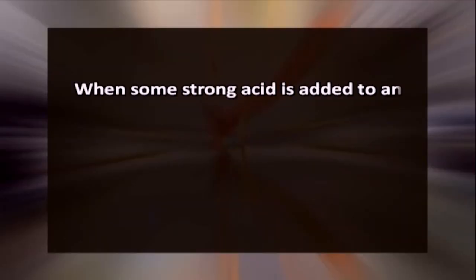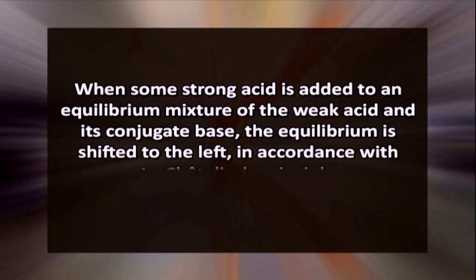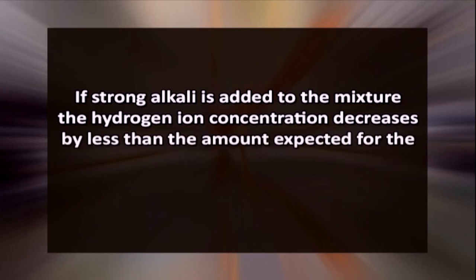When strong acid is added to an equilibrium mixture of weak acid and its conjugate base the equilibrium is shifted to the left in accordance with the Le Chatelier's principle. Because of this the hydrogen ion concentration increases by less than the amount expected for the quantity of strong acid added. Similarly if the strong alkali is added to the mixture the hydrogen ion concentration decreases by less than the amount expected for the quantity of alkali added.